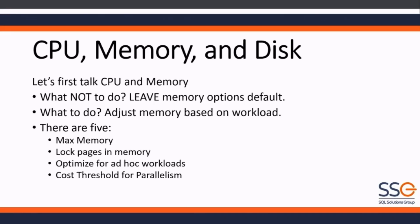99% of the time, the defaults for these values are wrong. When you execute a query, SQL Server looks at that cost — you can see it in the query window — and if it's above the threshold, it will parallelize that query. If it's below it, it won't. The maximum value is very high, so you definitely want to change that default.